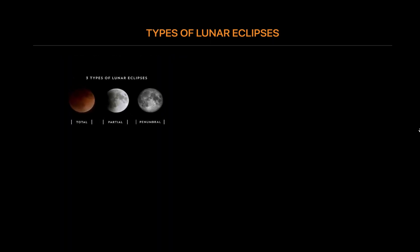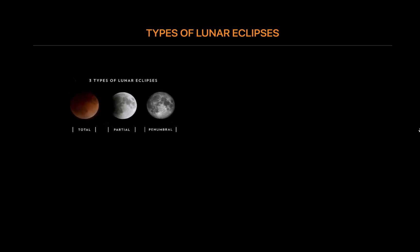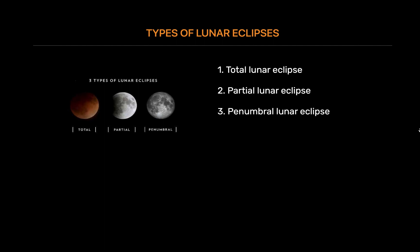Types of lunar eclipses. There are three types of lunar eclipses: total lunar eclipse, partial lunar eclipse, and penumbral lunar eclipse.